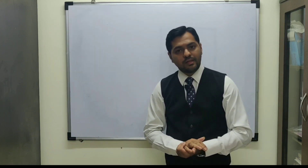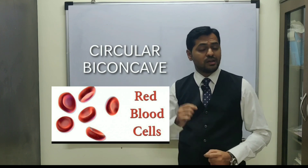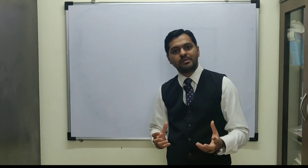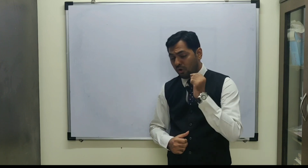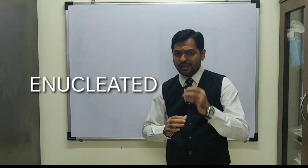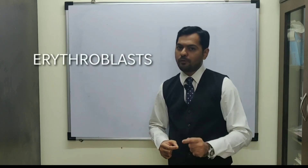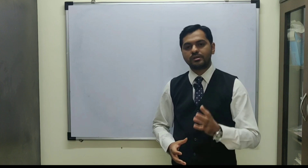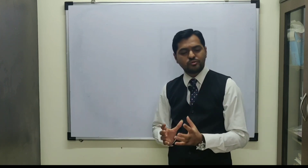The shape of RBCs is circular and biconcave. This shape increases the surface area so more hemoglobin can be accommodated, since hemoglobin performs the major function of the RBC. RBCs are enucleated — they lack a nucleus. They are originally produced as nucleated erythroblast cells, but during maturation the nucleus degenerates to make space for hemoglobin.